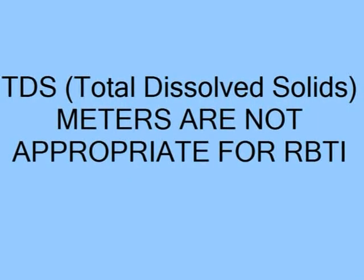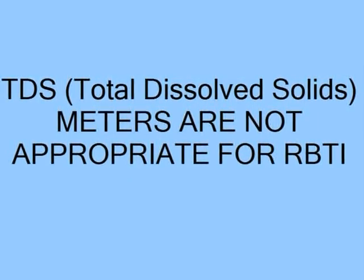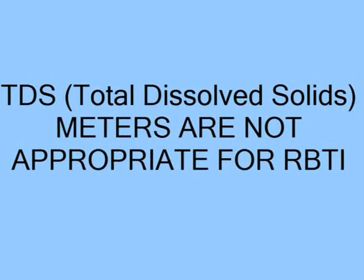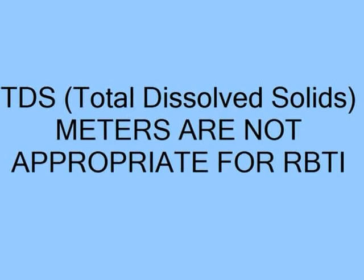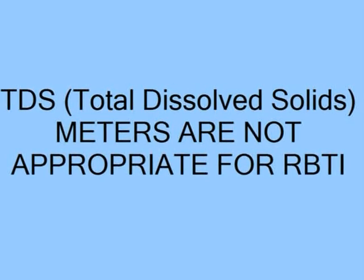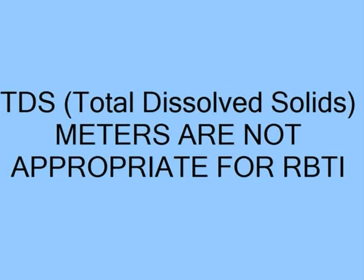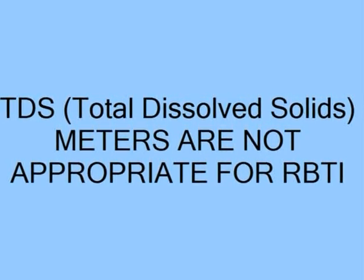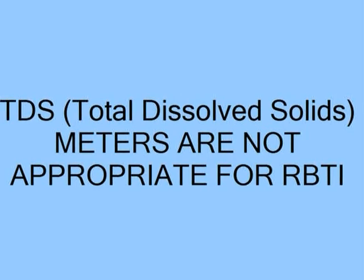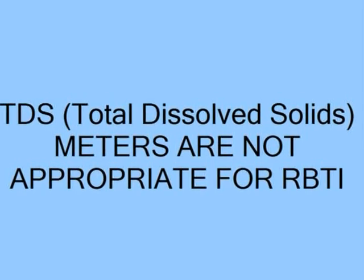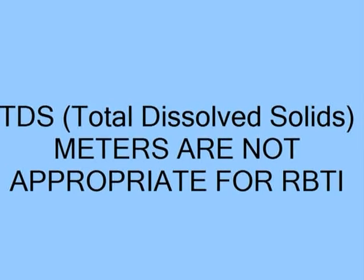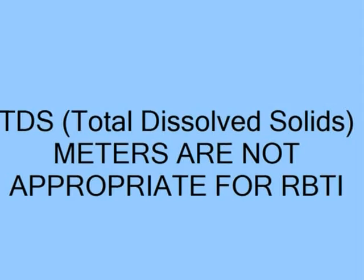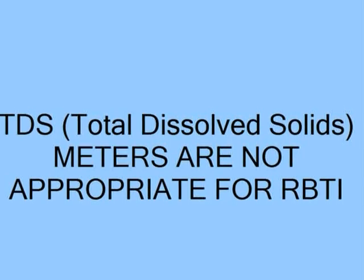You're going to come across cheap TDS meters — they're used a lot for water testing, but they are simply not appropriate for RBTI. It's possible you could get an estimate with one, but TDS meters, depending on the types of metals involved in the solids, will give you false readings. There are actual calibration charts that have to go with a TDS meter, but you just can't use it reliably and comfortably with RBTI.